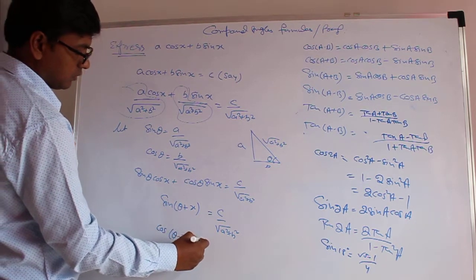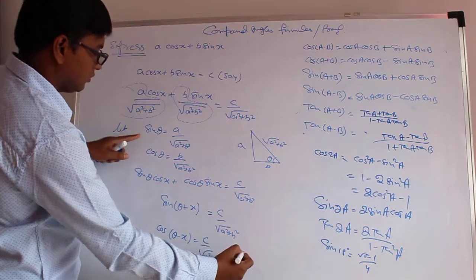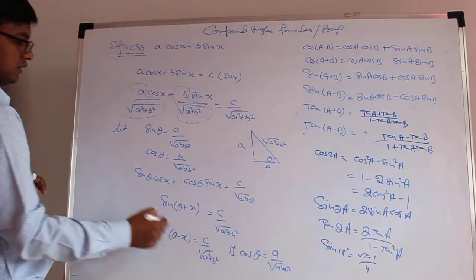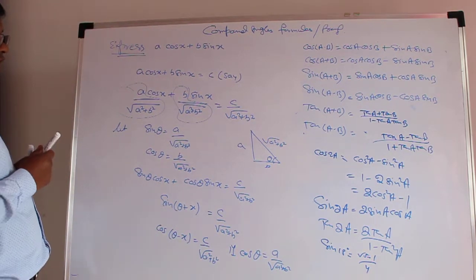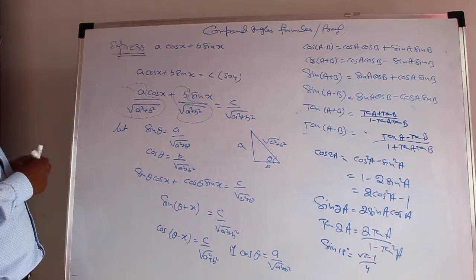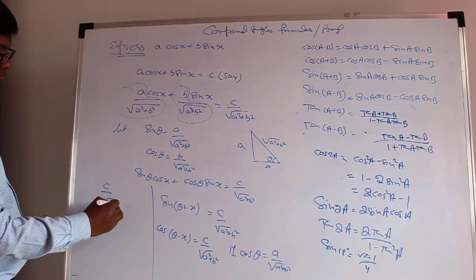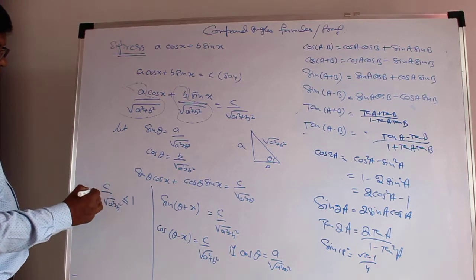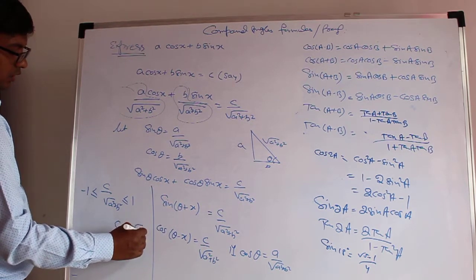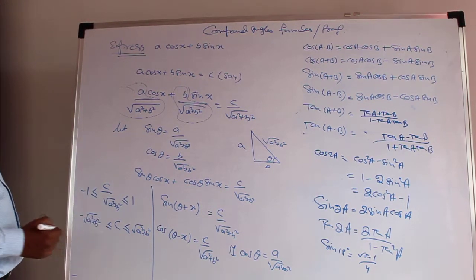So cos(θ − x) = C / √(A² + B²). If we assume cos θ = A / √(A² + B²), then since the maximum and minimum value of sine is 1 and −1, C / √(A² + B²) ranges from −1 to 1. Therefore C will go to a maximum of √(A² + B²) and a minimum of −√(A² + B²).